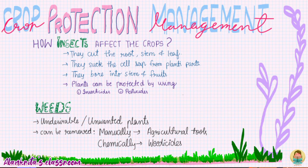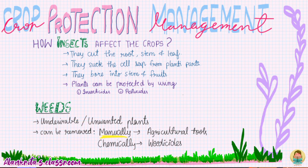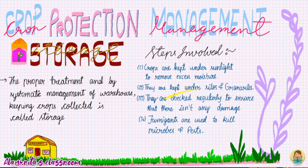Crop protection management covers how insects affect crops — they cut roots, stems, and leaves, suck cell sap from plant parts, and bore into stems and roots. To protect plants, we can use insecticides for insects and pesticides for pests. Weeds are undesirable and unwanted plants that grow with crops and can be removed manually using agricultural tools or chemically using weedicides.